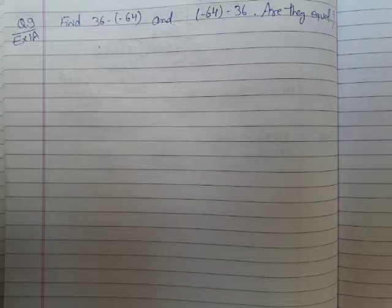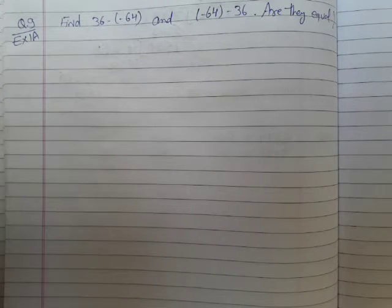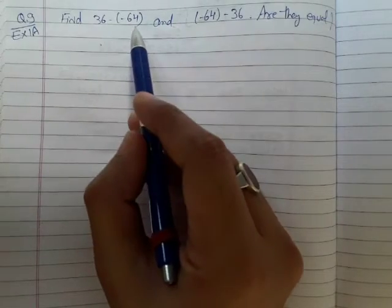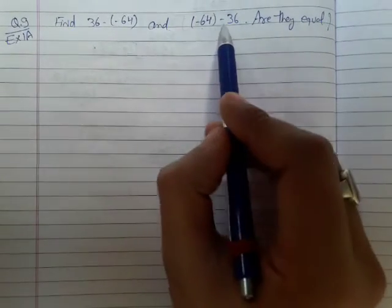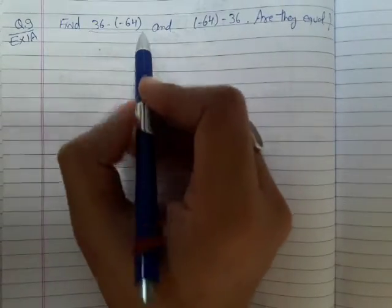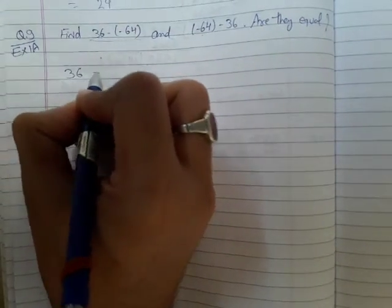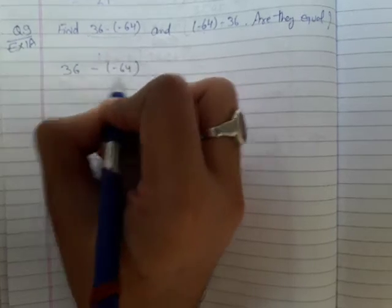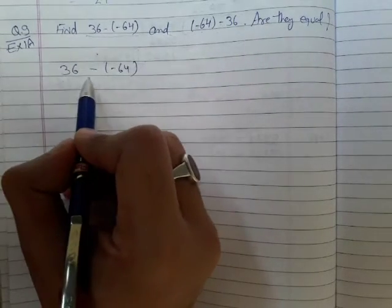Next is question number 9 from exercise 1a. Find 36 - (-64) and (-64) - 36. Are they equal? So first we will solve this part: 36 - (-64). Now you can see this is